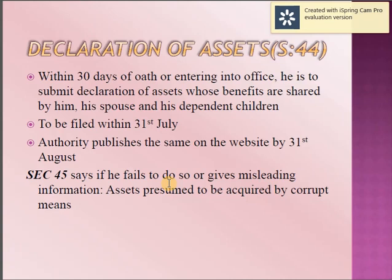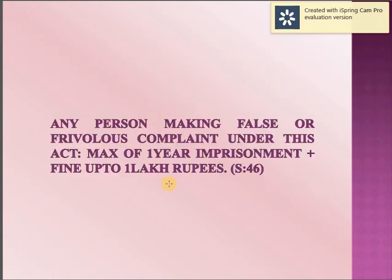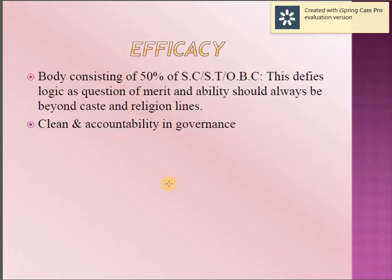If the public servant is acquitted, compensation and benefits are given back. If not, the property goes to the central government. Section 44 says that within 30 days of taking oath or entering into office, the public servant is to submit a declaration of assets — including those whose benefits are shared by him, his spouse, and dependent children — to be filed by 31st July. Authorities publish the same on the website by 31st August. Section 45 says that if he fails to do so or gives misleading information, it is presumed to have been acquired by corrupt means. Section 46 states that any person making a false complaint under this act gets a maximum of one year imprisonment and a fine of up to one lakh rupees.